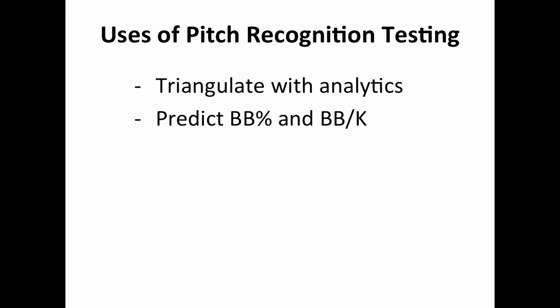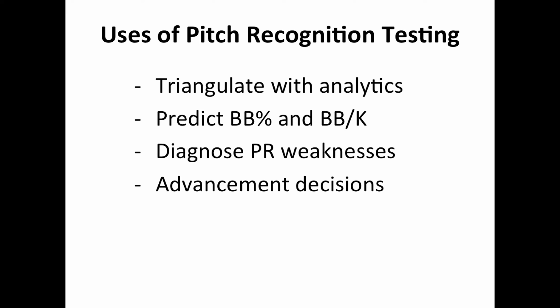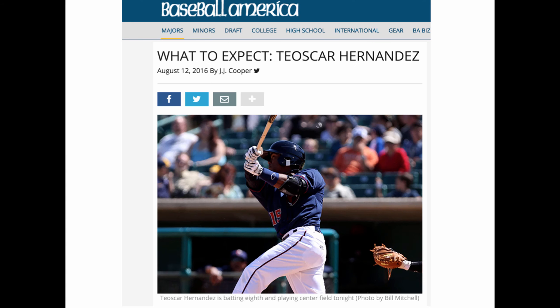As Dr. Mueller and I continue to do our research, we are finding correlations with key batting statistics — perhaps not surprising ones. It's something that can be used to help diagnose player weaknesses. Let's not go messing with a guy's swing mechanics if his problem is that, as players tend to say, 'I'm not seeing the ball, coach.' And it helps with advancement decisions. This is the time of year when a lot of prospects are getting called up.